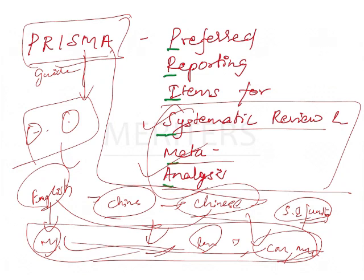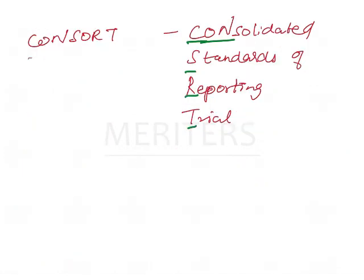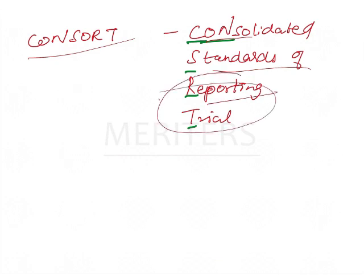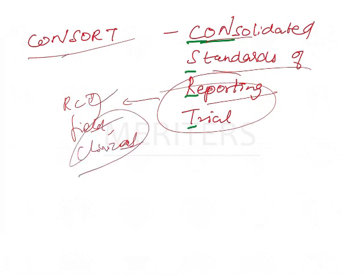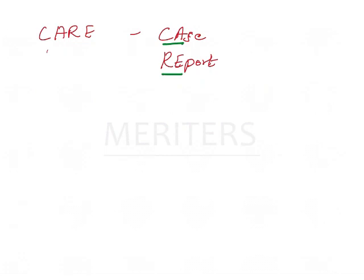PRISMA is applicable for systematic reviews and meta-analyses. Coming to CONSORT — CONSORT stands for Consolidated Standards of Reporting Trials. It is used for any clinical trial, field trial, or RCT (Randomized Controlled Trial). These guidelines are used for reporting clinical trials.